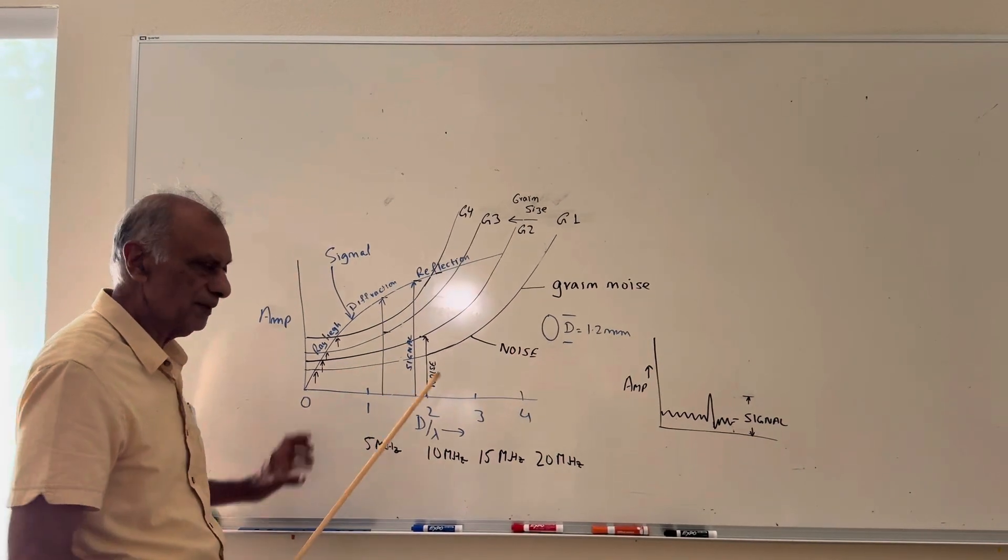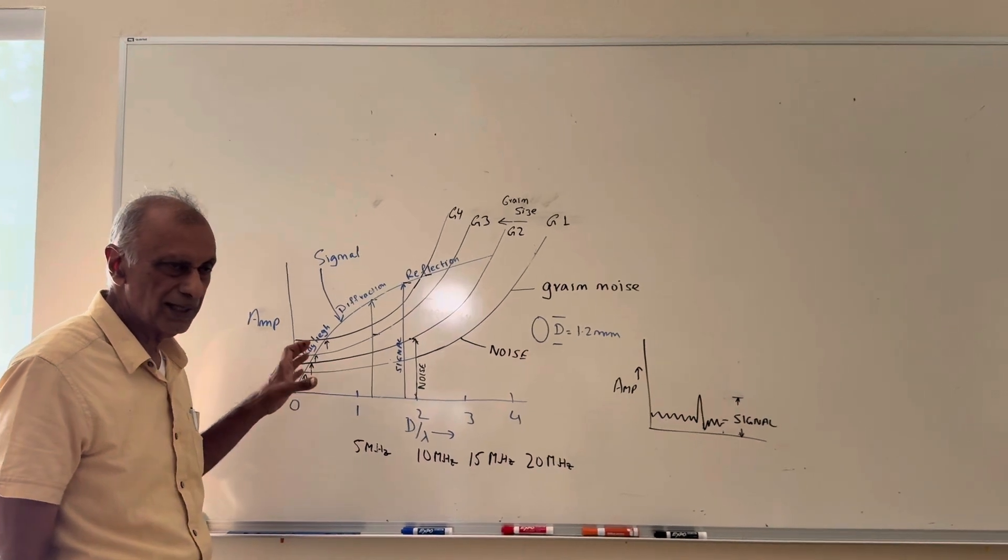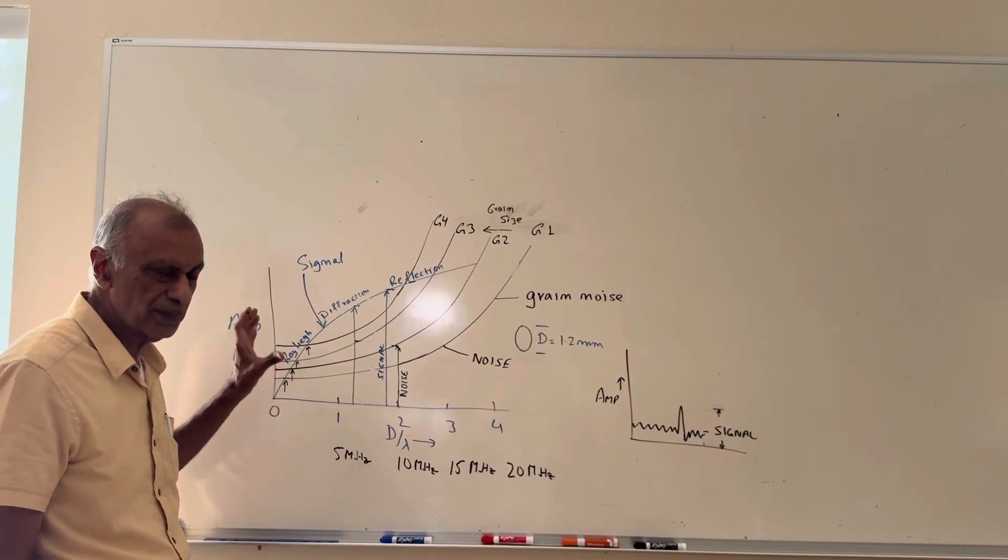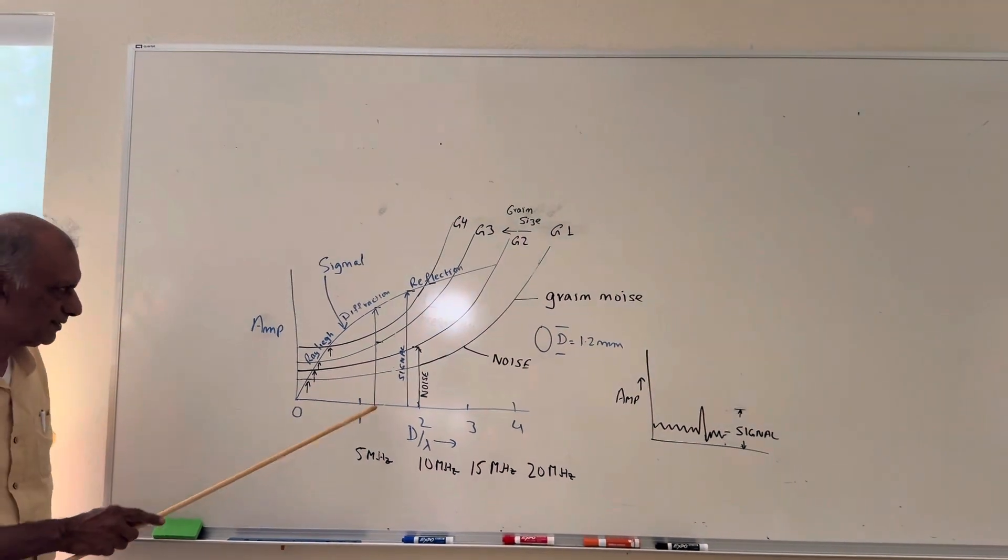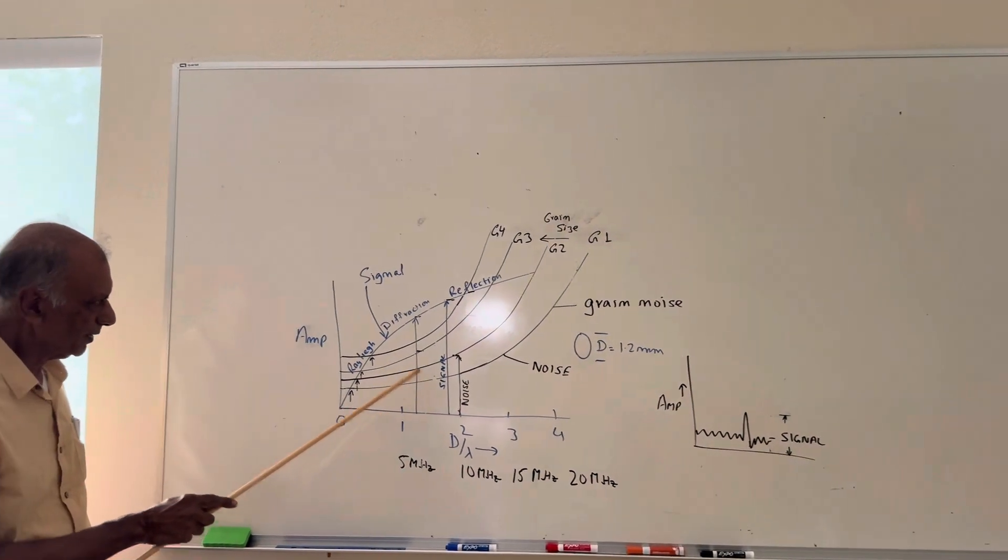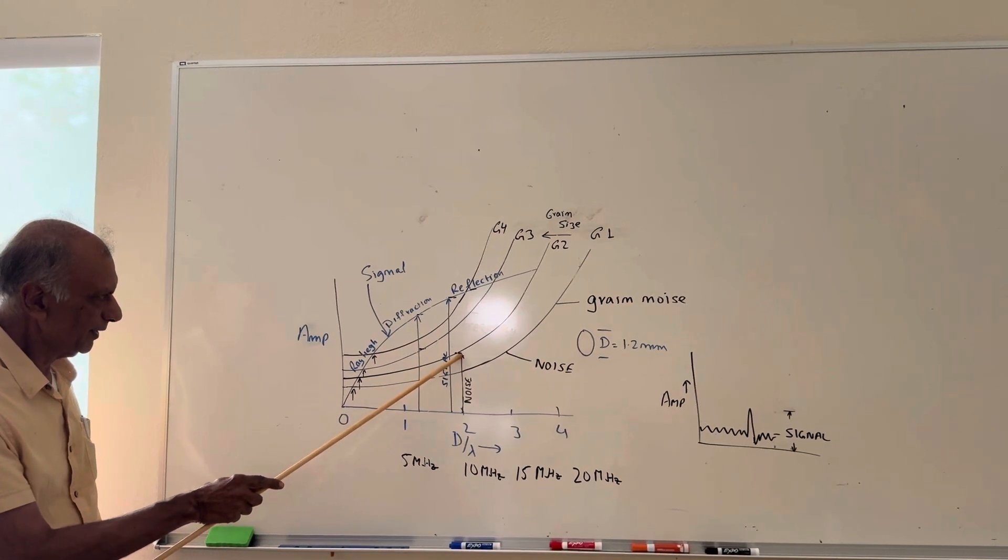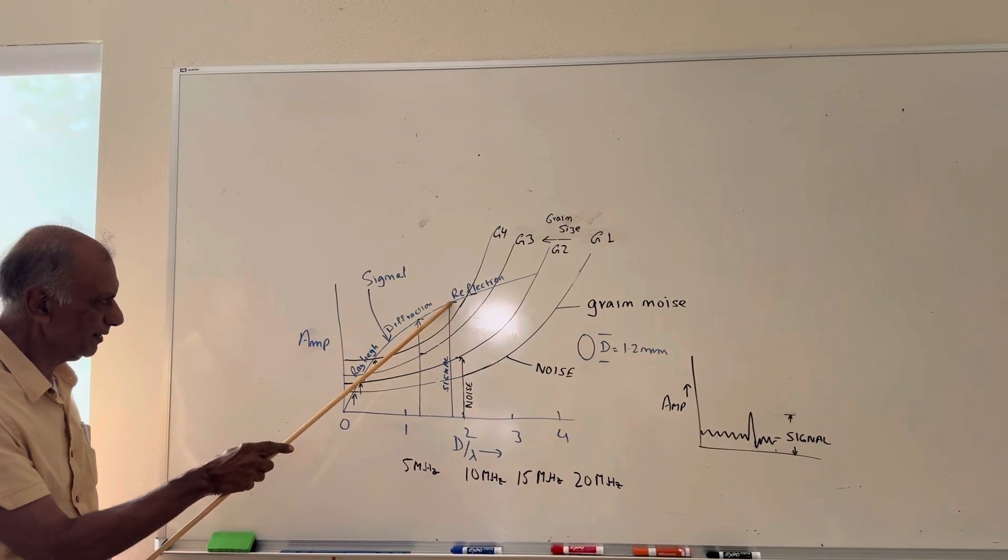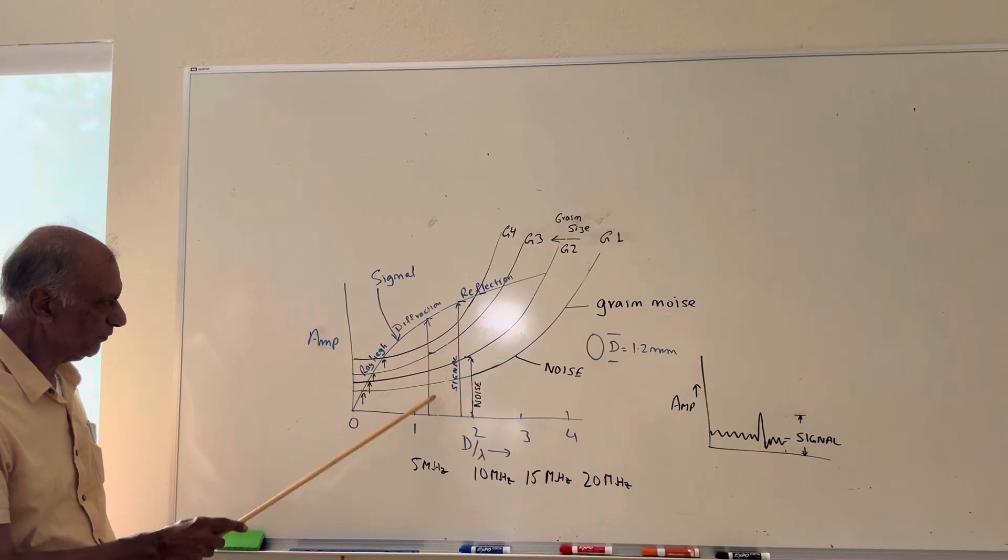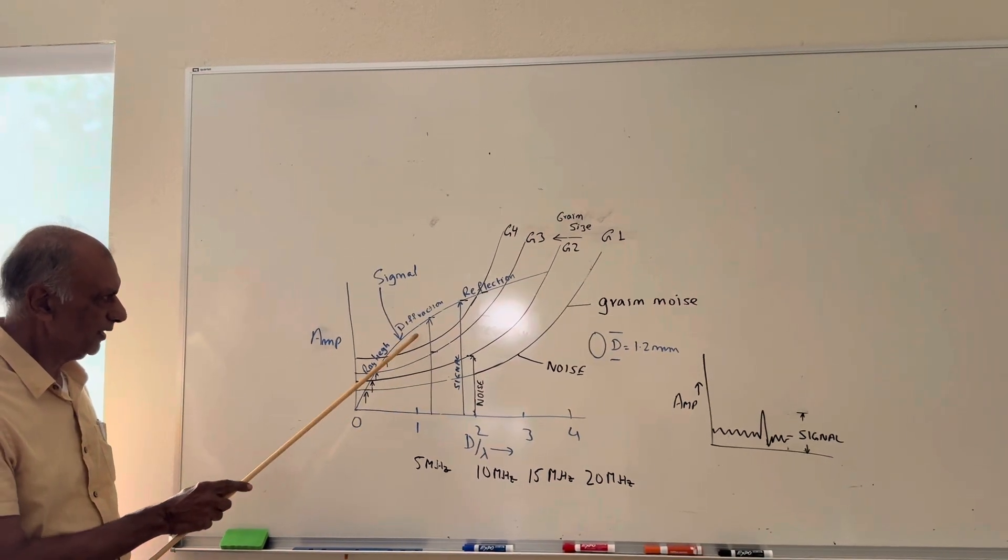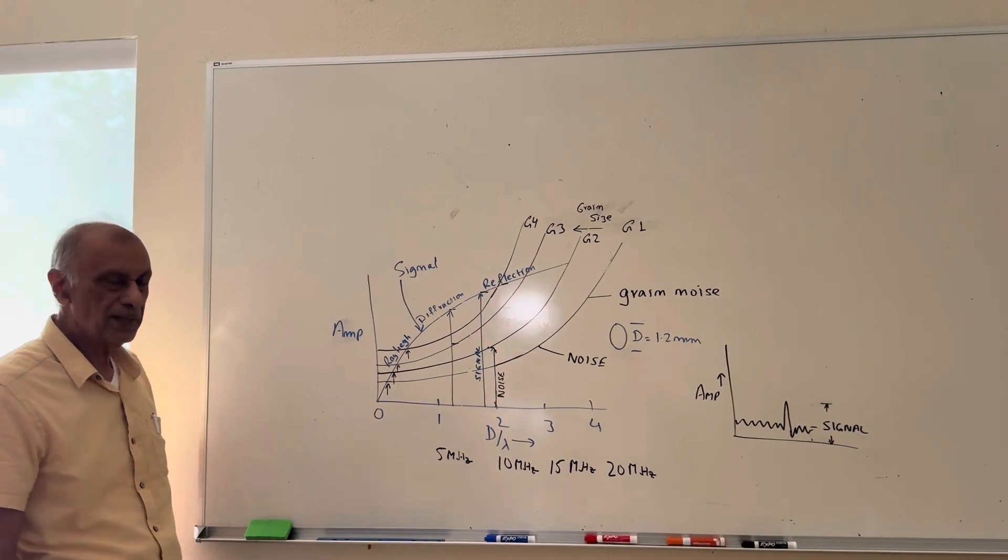Now, we have the maximum signal-to-noise ratio. What it means is, what should be the optimum frequency? Then we'll get the maximum signal-to-noise ratio, and that's going to depend on the grain size. So for different grain sizes, for example, here for this grain size, your optimum could be right here where we have the maximum signal-to-noise ratio. So for different ones, it's going to be different frequencies at which you will maximize the signal to noise ratio.